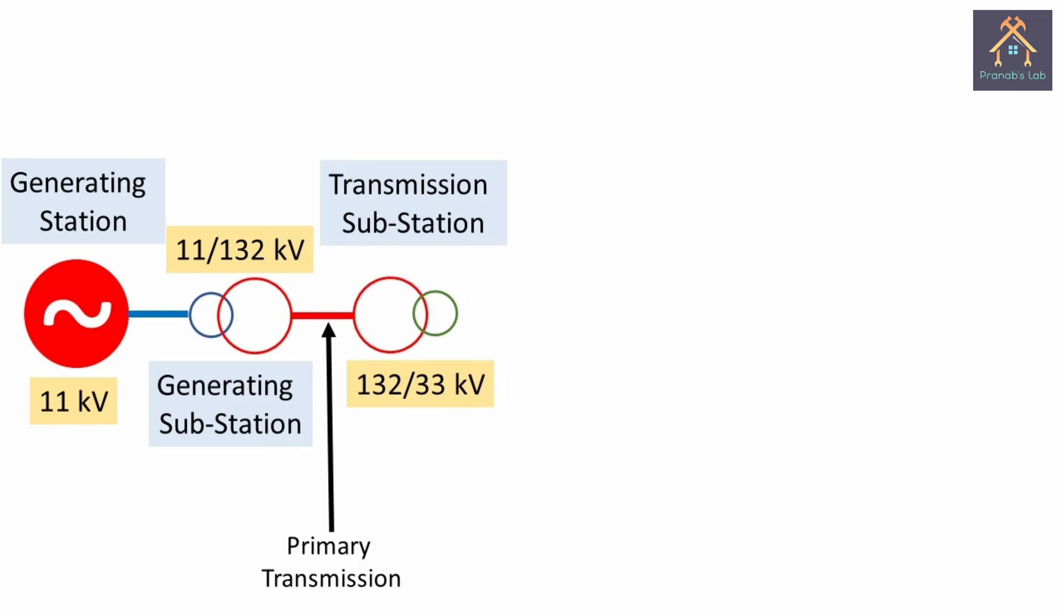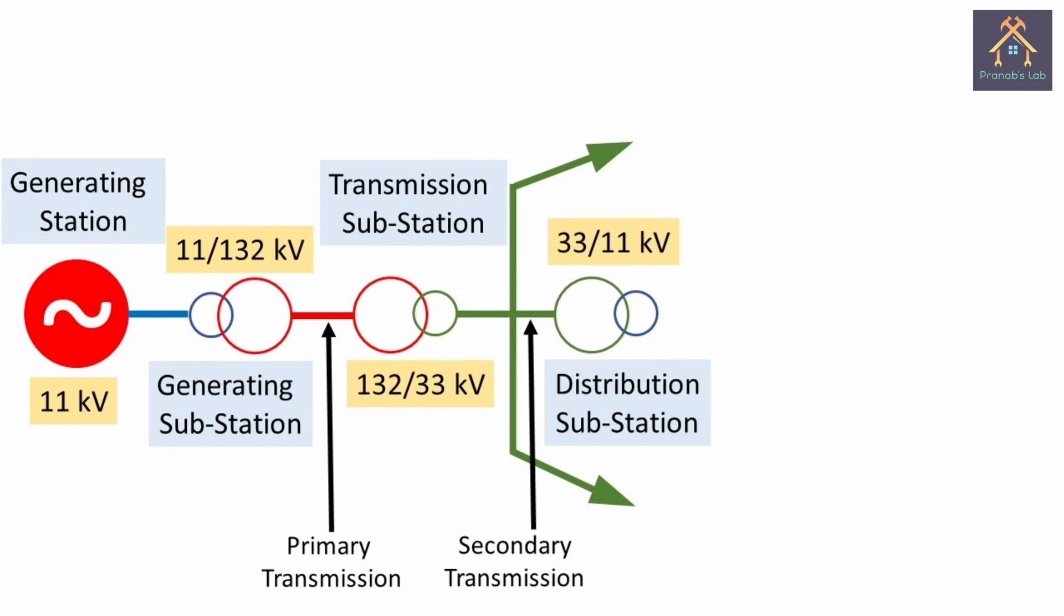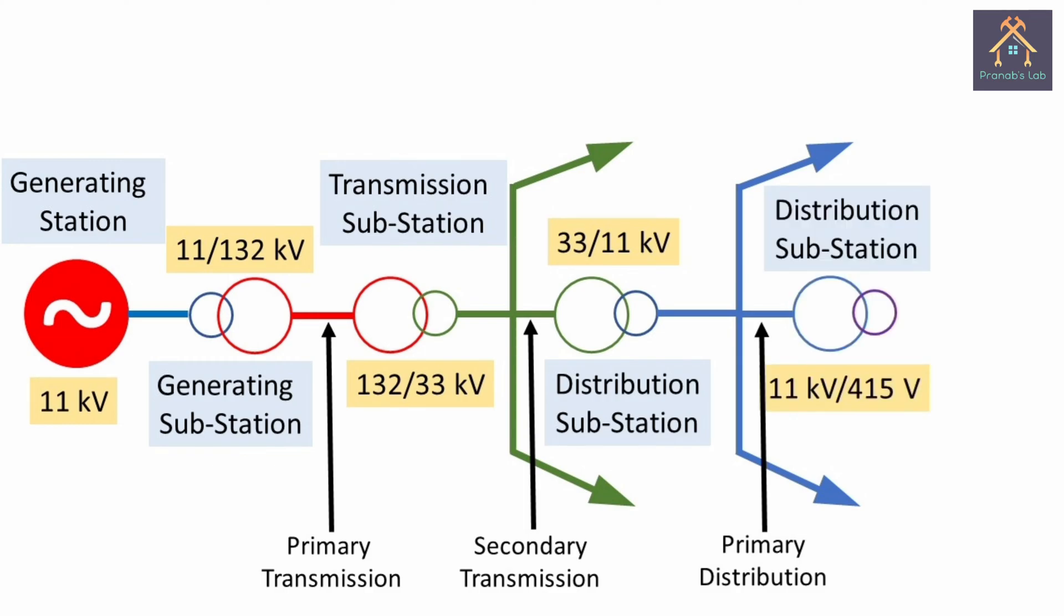Now, the 33 kV line from transmission substation is fed to three different feeders and this is called the secondary transmission. The feeders are coming to the 33 by 11 kV distribution substation and from distribution substation, it is again fed to three different primary distribution lines. From three distribution lines, it is stepped down from 11 kV to 415 V.